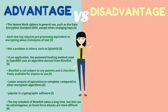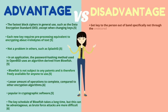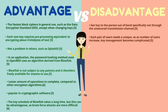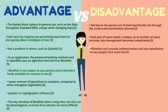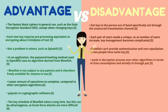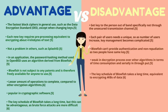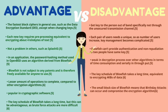The disadvantages of Blowfish include that the key must be transmitted securely, not through an unsecured channel. Each pair of users needs a unique key, so as the number of users increases, key management becomes complicated. Blowfish cannot provide authentication and non-repudiation as two parties share the same key. It also has weaknesses in the encryption process compared to other algorithms in terms of time consumption and serial throughput. The small block size of 64 bits means birthday attacks can occur and compromise the encryption. Blowfish has since been followed by TwoFish, which was created to replace it and is better in most ways.